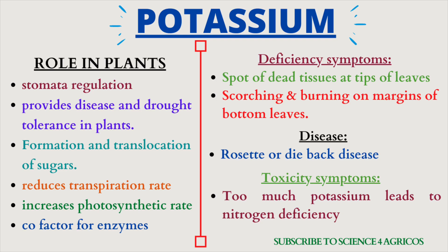If potassium deficiency is seen in plants, the symptoms will be spots of dead tissues at the tips of leaves and scorching and burning on the margins of bottom leaves. The disorder is rosette or dieback disease, which is usually associated with potassium deficiency. Toxicity: too much potassium leads to nitrogen deficiency.